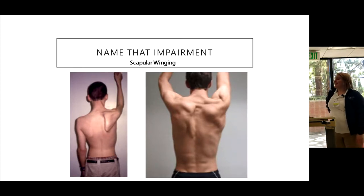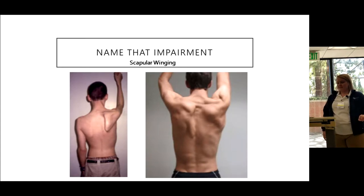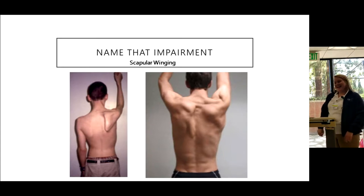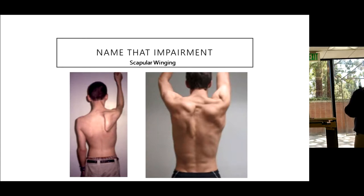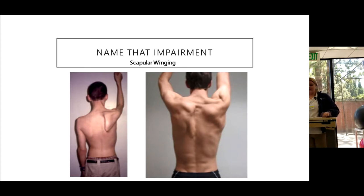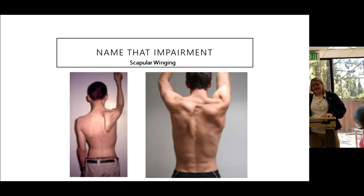This is scapular winging — an injury to the long thoracic nerve that controls the serratus anterior. This is what we'd diagnose as scapular winging compared to internal rotation, which is much more subtle. This person is incredibly strong in every other muscle not innervated by the long thoracic — low trap and others — with really strong delts, but he just doesn't have the serratus. These were patients seen in our clinic at Wash U.